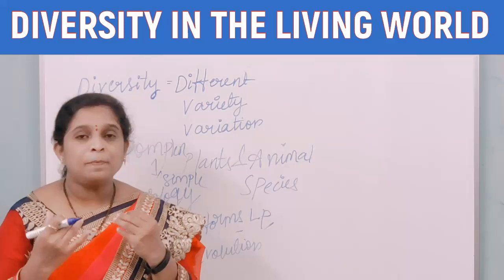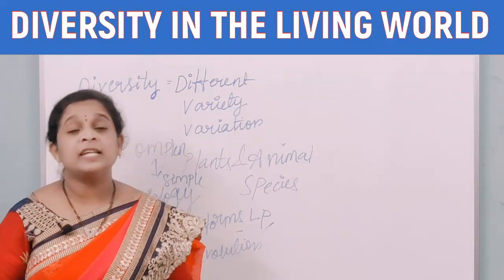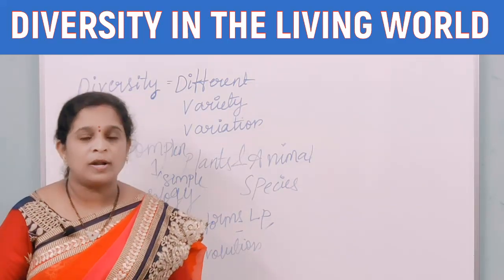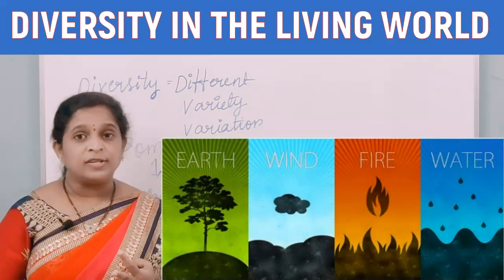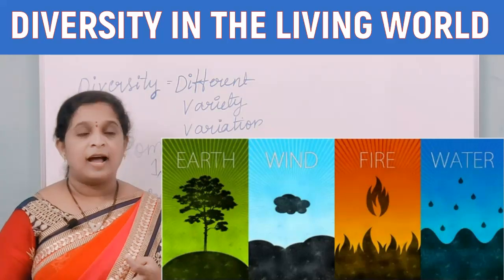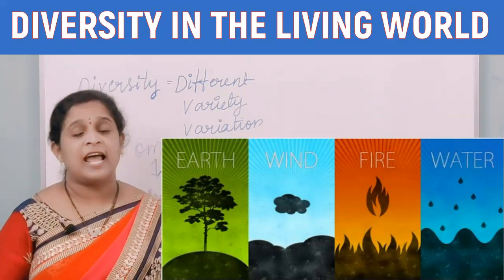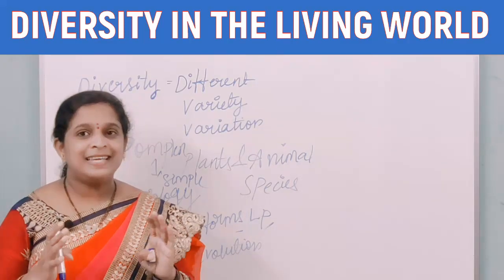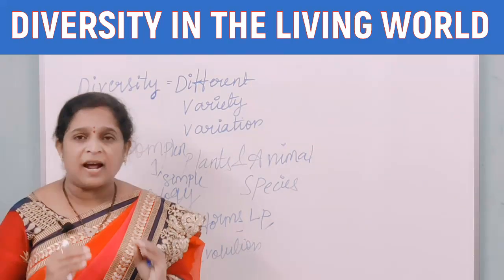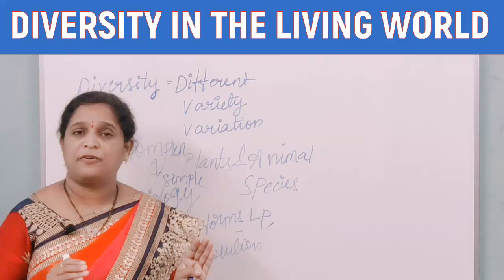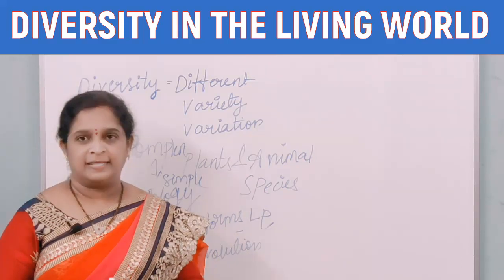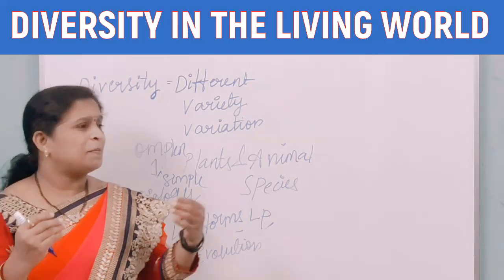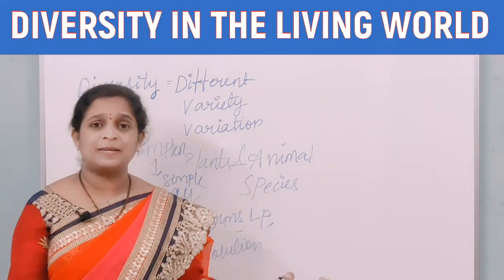People used to worship both inanimate and animate organisms. Inanimate means things like water, wind, and fire, and animate matters like plants and animals — they used to pray to these as gods. So we can see the living world is comprising of an amazing diversity of organisms.